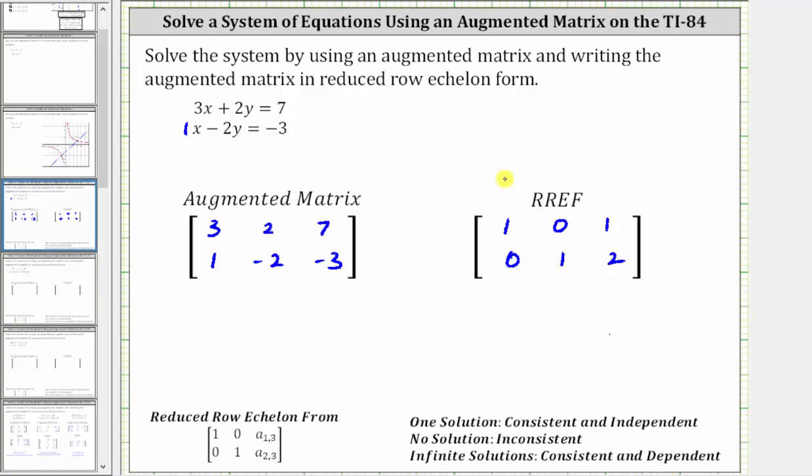Remember the coefficients of x are in column one. The coefficients of y are in column two. And the constants on the right are in column three. So the corresponding equation to this first row is one x equals one, or x equals one. And the corresponding equation for the second row is one y equals two, or y equals two, which is the solution to the system.